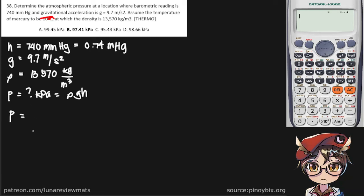So we can now simply put our values in. That's already in the correct units. Gravitational acceleration is 9.7, and finally our height—the height of a column of mercury is 0.74.